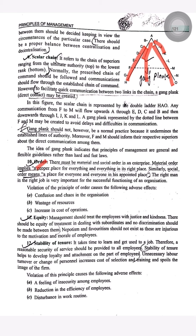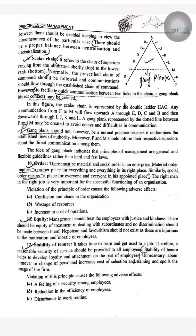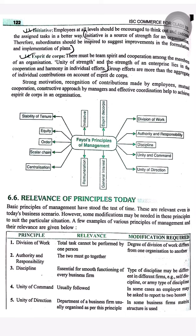Tenth, Order: there must be social order in the enterprise — the experienced and eligible should be placed on higher posts. Eleventh, Equity: there should be equity in every field — whether giving bonuses, encouragement, or promotions. Twelfth, Stability of Tenure: there should be stability of tenure so that workers can work properly without any sense of risk or insecurity. Thirteenth, Initiative: there should be initiative amongst employees so that they feel comfortable in the firm and work properly.